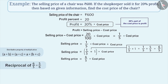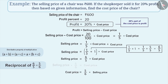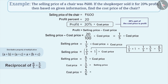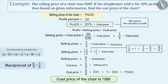Multiplying both sides by the reciprocal of 6/5, that is 5/6, we get: selling price × (5/6) = cost price. That is, cost price = (5/6) × selling price. Therefore, cost price = (5/6) × 600, which is equal to 5 × 100, which is 500 rupees. Thus, the cost price of the chair is rupees 500.